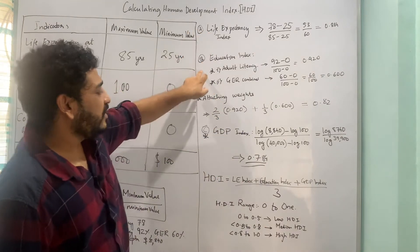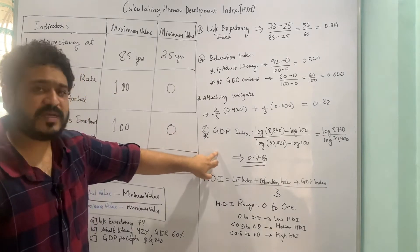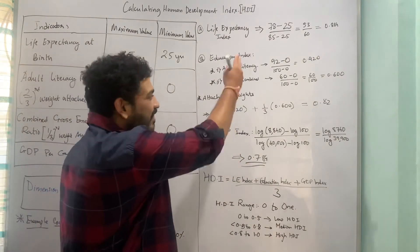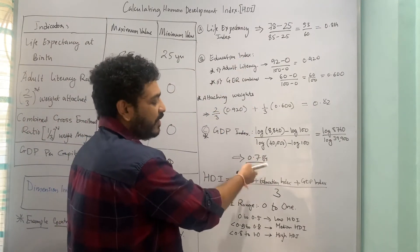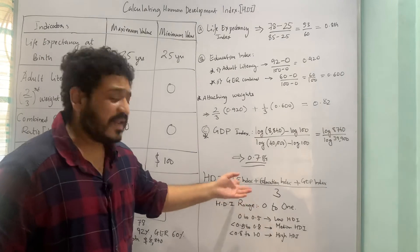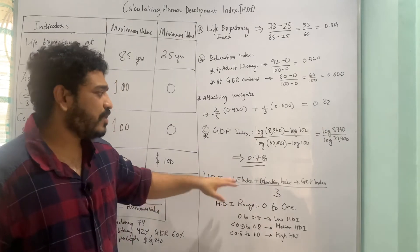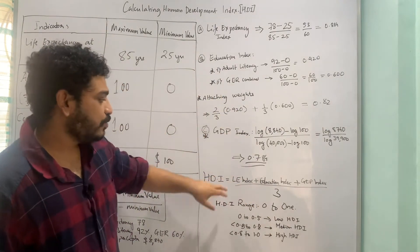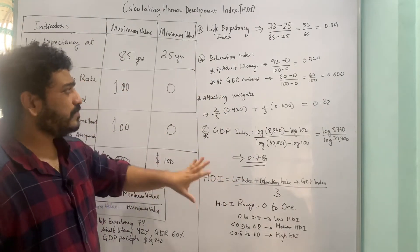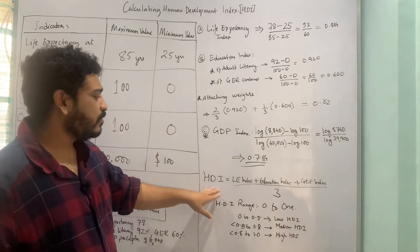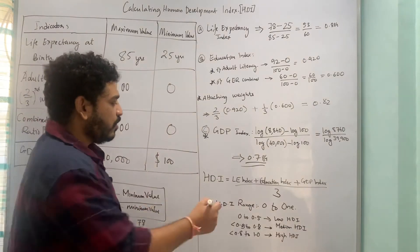Now I have all three indices: the life expectancy index, the education index, and the GDP index. To get the final HDI, I simply add them up and divide by 3, taking a simple average. I'll leave that final calculation as an exercise for you.